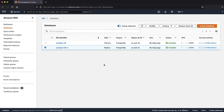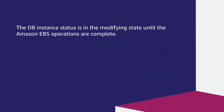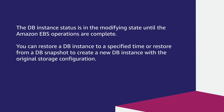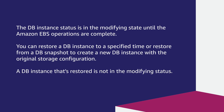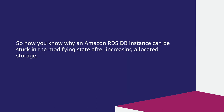After a storage modification has started, the operation can't be cancelled. The DB instance status is in the modifying state until the Amazon EBS operations are complete. You can restore a DB instance to a specified time or restore from a DB snapshot to create a new DB instance with the original storage configuration. A DB instance that's restored is not in the modifying status. So now you know why an Amazon RDS DB instance can be stuck in the modifying state after increasing allocated storage.